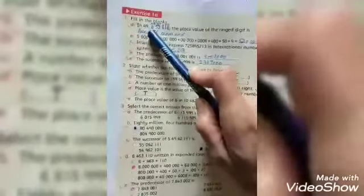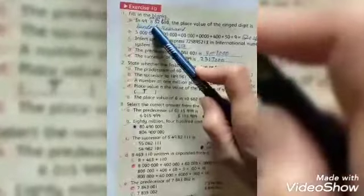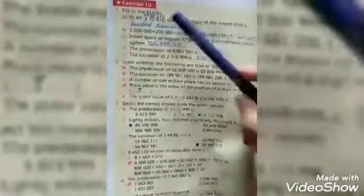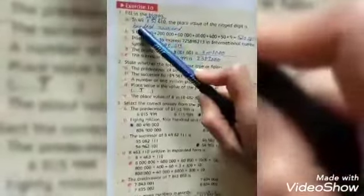The first question of exercise 1a is fill in the blank. In 49852610, the place value of the ringed digit is 100,000.